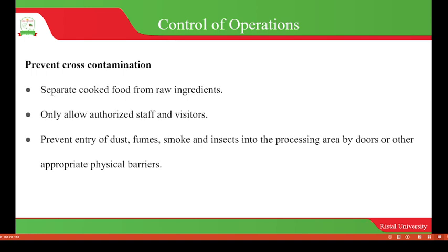During the operation, we have to always control cross-contamination. Cross-contamination can be prevented by separating cooked food from raw ingredients, unprepared food, or raw materials. This will help to avoid the transfer of pathogens from raw foods to cooked foods.